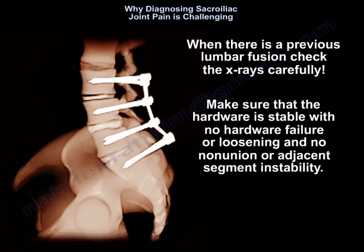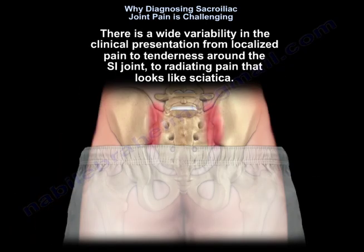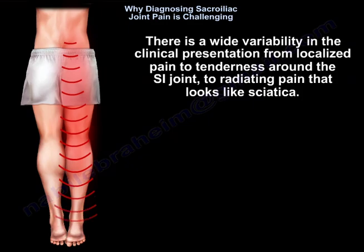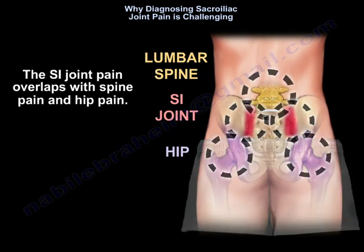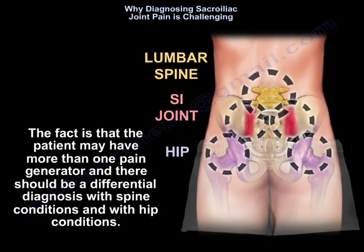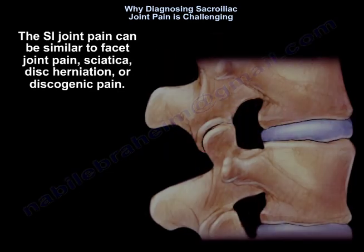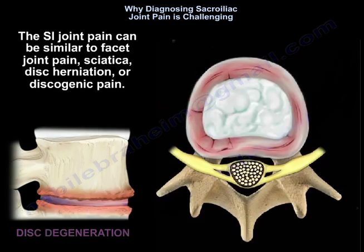When there is a previous lumbar fusion, check the X-rays carefully. Make sure the hardware is stable with no hardware failure or loosening and no non-union or adjacent segment instability. There is wide variability in clinical presentation, from localized pain and tenderness around the sacroiliac joint to radiating pain that looks like sciatica. The sacroiliac joint pain overlaps with spine pain and hip pain. A patient may have more than one pain generator, so differential diagnosis should include spine conditions, hip conditions, facet joint pain, disc herniation, or discogenic pain.